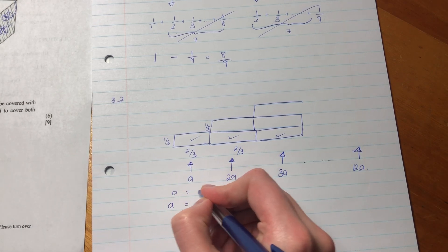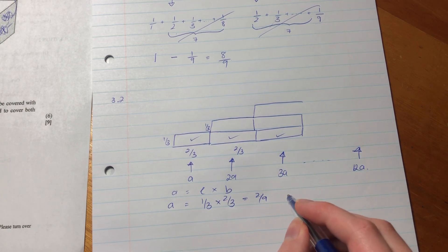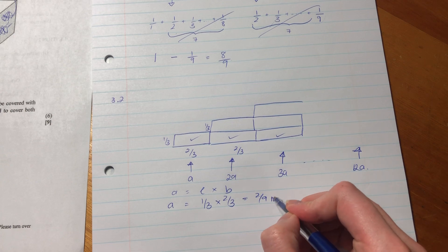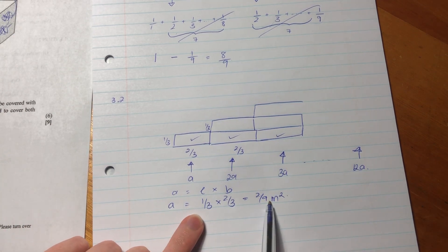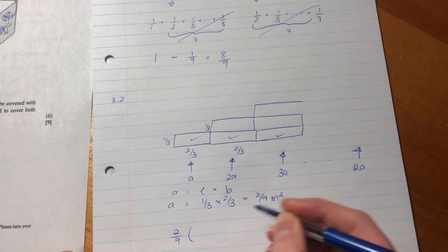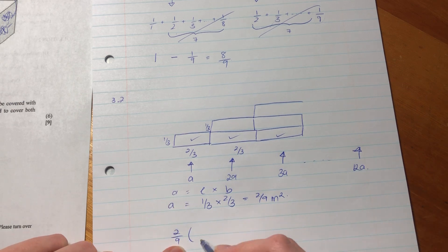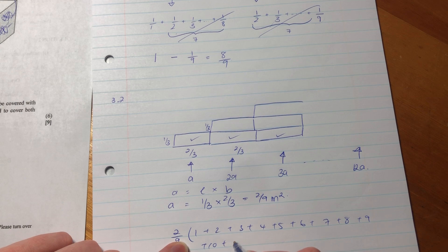So a equals length times breadth, which is 2/9 meters squared. Now we need to sum this across all the rectangles. It's going to be a times (1 + 2 + 3 + 4 + 5 + 6 + 7 + 8 + 9 + 10 + 11 + 12).